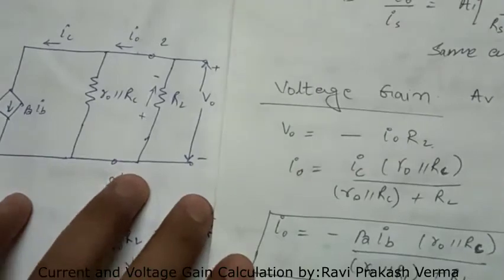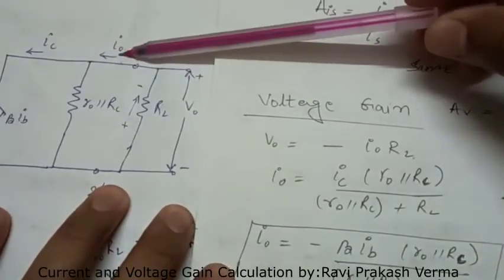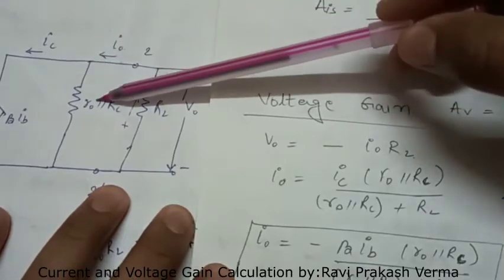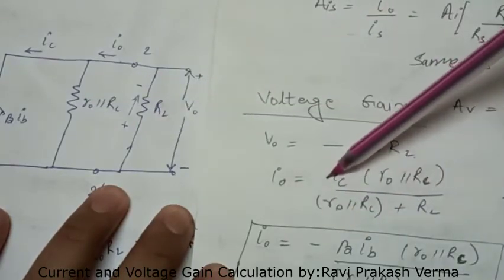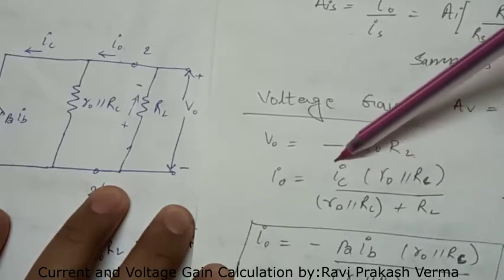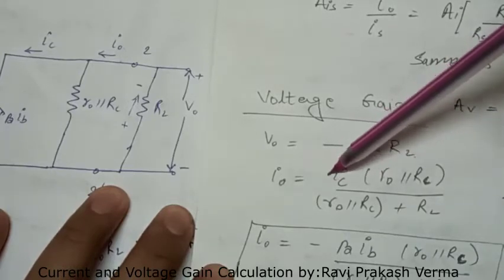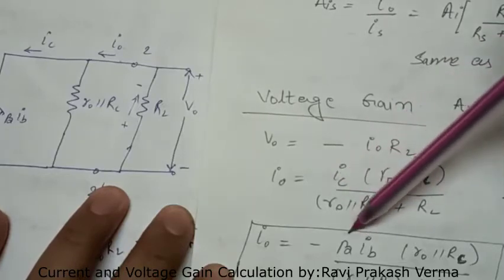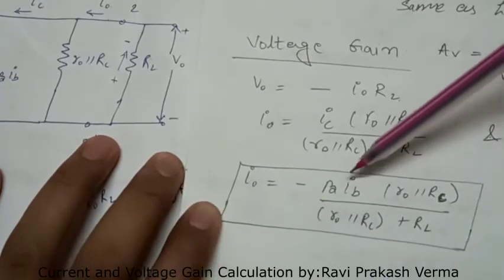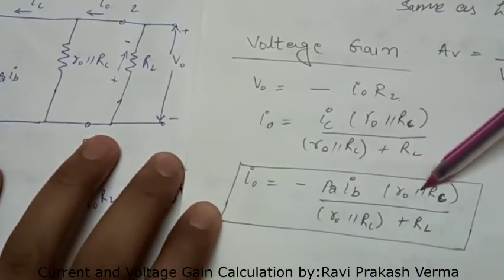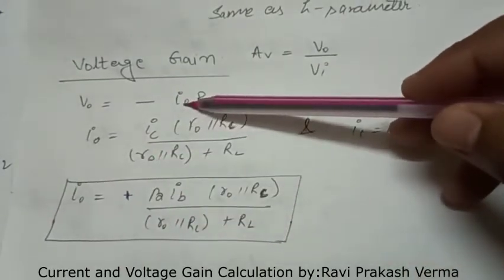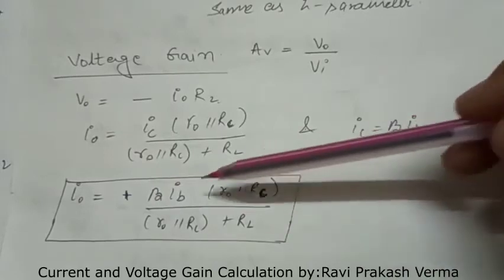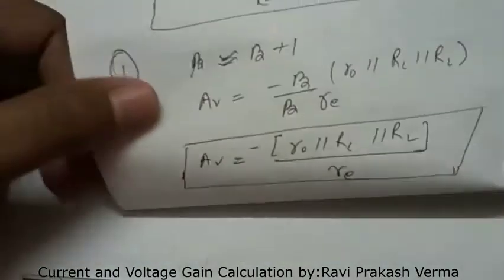From the circuit, the current I naught passing through the load resistance can be written in terms of IC using the current divider rule: I naught equals IC times (R naught parallel RC) divided by (R naught parallel RC plus RL). The value of IC is obtained using beta: IC equals beta times IB. Substituting, I naught equals beta IB times (R naught parallel RC) divided by (R naught parallel RC plus RL).